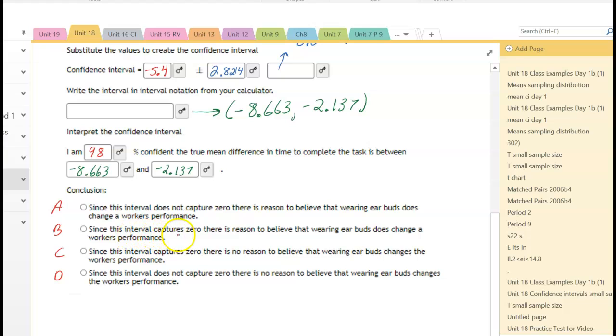B, since this interval captures zero, well, that's not true. C, since the interval captures zero, that's not true. D, since the interval does not capture zero, well, that's a contender. So now I need to read each problem a little more detailed.